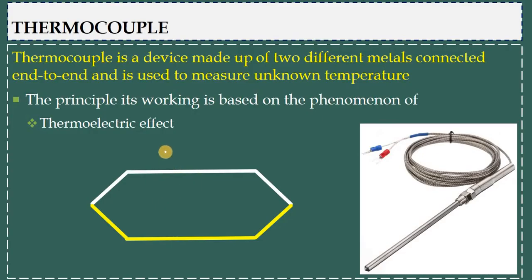A thermocouple is a device which is made up of two different metals connected end-to-end and is used to measure unknown temperature. Here you can see metal one and metal two, so they have formed two junctions: junction one and junction two. The industrial purpose thermocouple looks like this picture, which is a probe-shaped device.